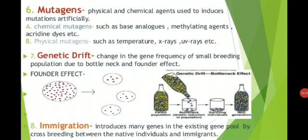The sixth source of genetic variability is mutagens. These are physical and chemical agents used to introduce mutations artificially. Chemical mutagens include base analogs, methylating agents, and acridine dyes. Physical mutagens include temperature, X-rays, and ultraviolet rays.